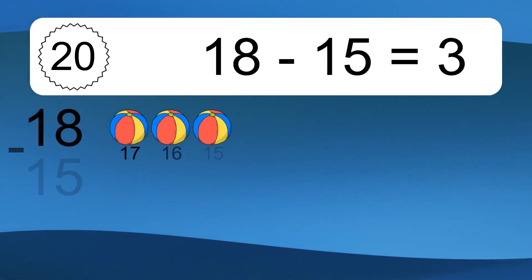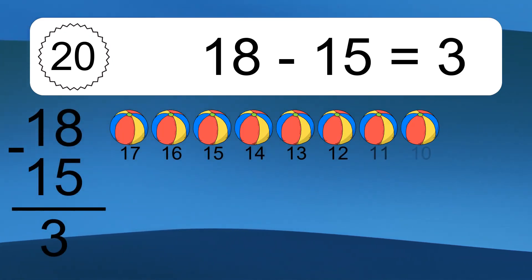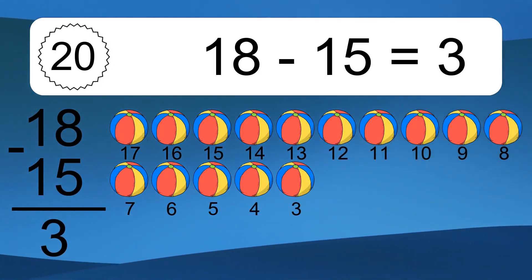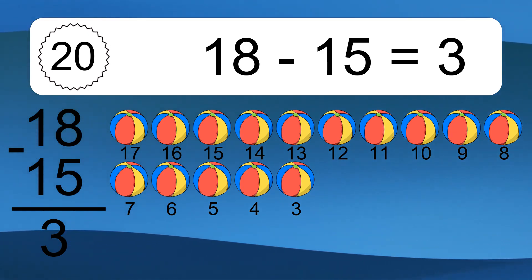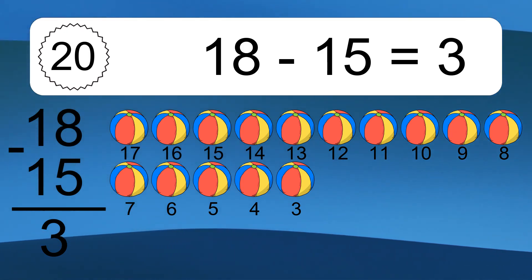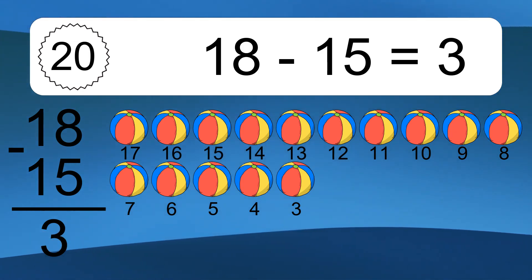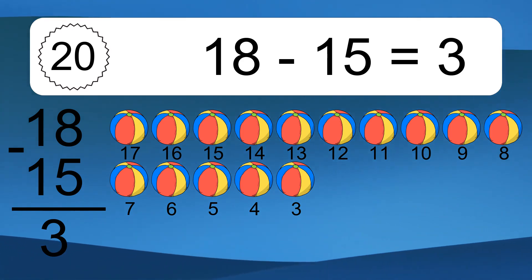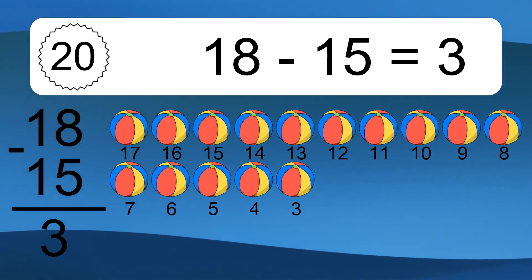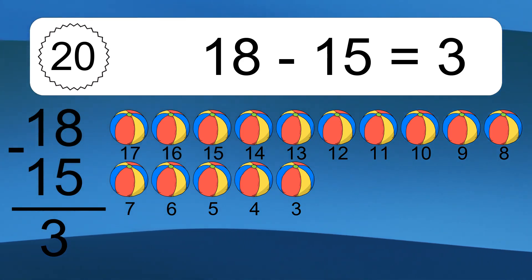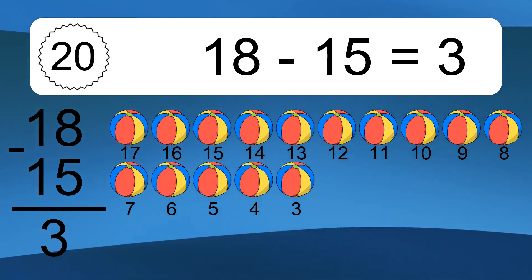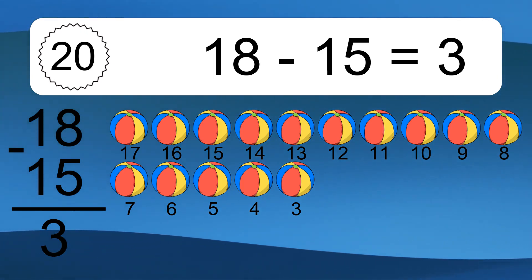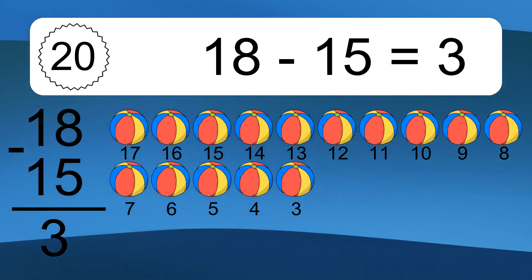18 minus 15 equals 3. Let's count it: 17, 16, 15, 14, 13, 12, 11, 10, 9, 8, 7, 6, 5, 4, 3.